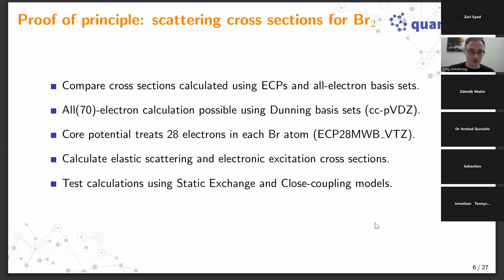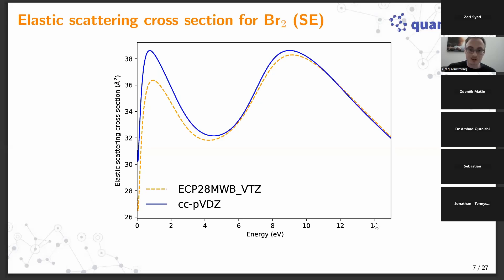Static exchange is a method of running R-matrix calculations in which you neglect target polarization and target excitation. Neglecting these makes it less physical but good for testing since calculations run quickly — you can calculate elastic scattering but not account for target excitation. For that you use close coupling, which includes multiple target states. This first result shows the elastic scattering cross section using static exchange for bromine-2: the blue curve is the all-electron calculation and the orange dashed curve uses ECPs with the 28-electron core potential per bromine.